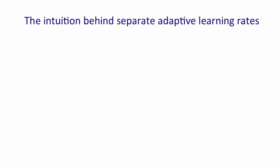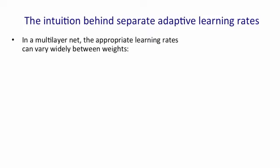Let's start by thinking why having separate adaptive learning rates on each connection is a good idea. The problem is that in a deep multi-layer net, the learning rates can vary widely between different weights, especially between weights in different layers.